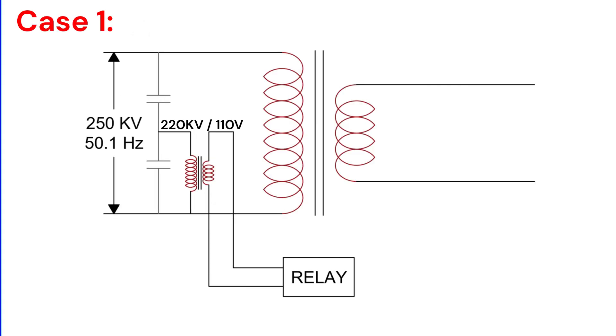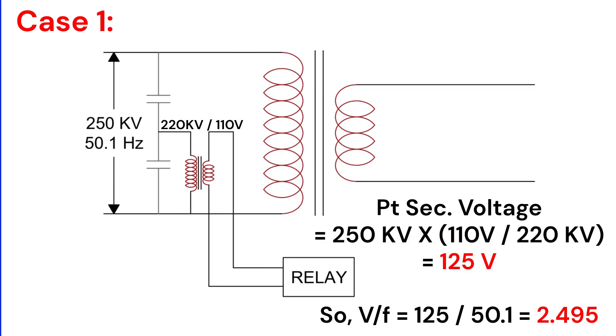Let's look at two scenarios. Case 1: The primary voltage rises to 250 kV, and the frequency is 50.1 hertz. The PT secondary voltage becomes 125 volts, so the V/F ratio will be 125 divided by 50.1, which equals approximately 2.495. Since this exceeds our set limit of 2.42, the relay will pick up and trip after some time.